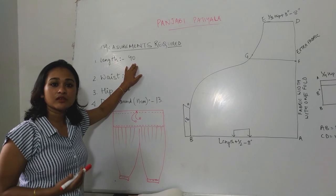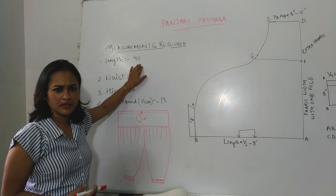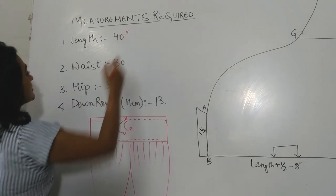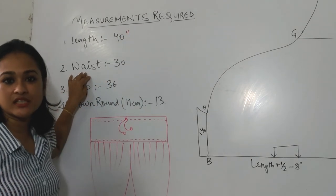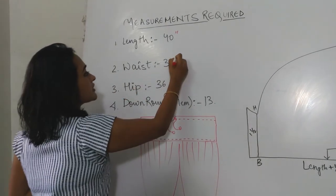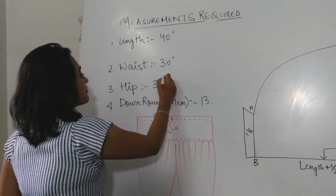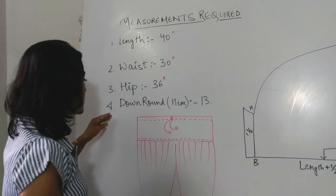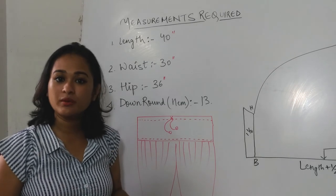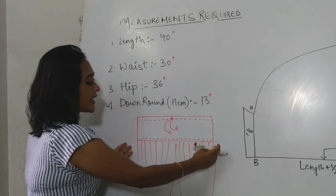The length depends on each customer — it depends on their height. For example, we have taken a length of 40 inches. Measurements are always taken in inches. The second measurement is waist — waist means the hip area — we have taken 30 inches. Then the hip, we have taken 36 inches. And then the down round hem, we have taken 13 inches.